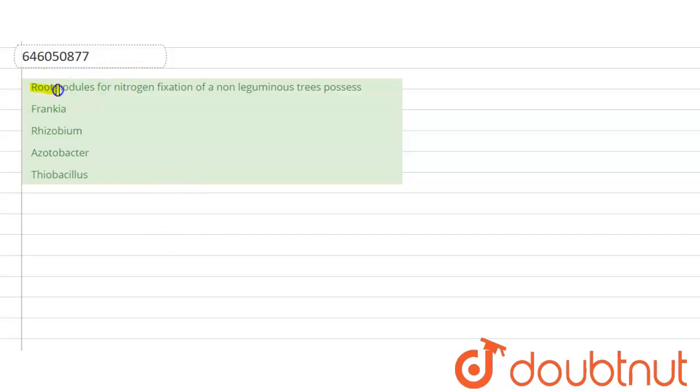have to discuss that the root nodule used for the nitrogen fixation of a non-leguminous tree possesses. That is: Frankia, Rhizobium, Azotobacter, or Clostridium.